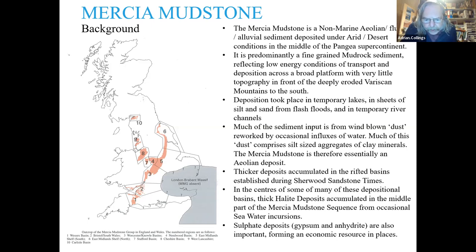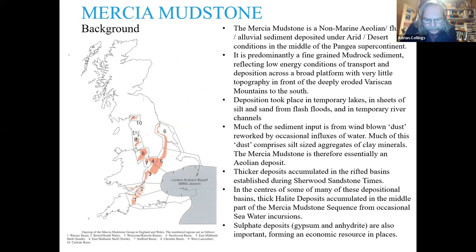Thicker deposits accumulated in the rifted basins established during Sherwood Sandstone times, and in the centres of some or many of these depositional basins, thick halite deposits accumulated in the middle part of the Mercia Mudstone sequence from occasional seawater incursions. Sulfate deposits — gypsum and anhydrite — are also important, forming an economic resource in places.